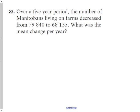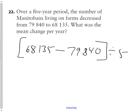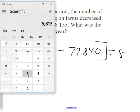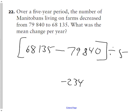Question 22. Over a five-year period, the number of Manitobans living on farms decreased from 79,840 to 68,135. What was the mean change per year? So this is a tricky one. The population now, take away the population before, divided by how many years? Divided by five years will be the average. I'll need a calculator for this one. 68,135 take away 79,840 means the population dropped by 11,705. Take that 11,705 and divide it by five to get the average. And therefore, the mean change in population was negative, or was losing 2,341 people per year.